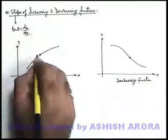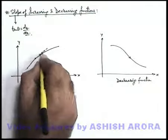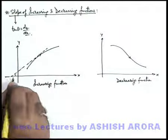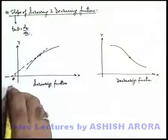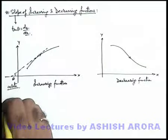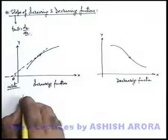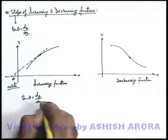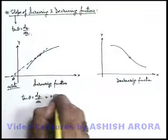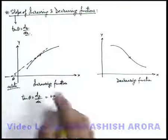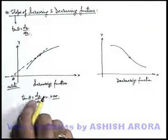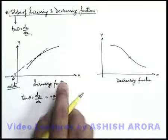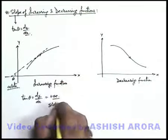Now, if we draw a tangent at any point of such a curve. You can see, the angle theta which the tangent makes with the x axis is an acute angle. So for an acute angle, if we find the value of tan theta or we find the value of dy by dx, it comes out to be a positive value. Because tan of an acute angle is always positive. So always remember that for an increasing function the slope is positive.